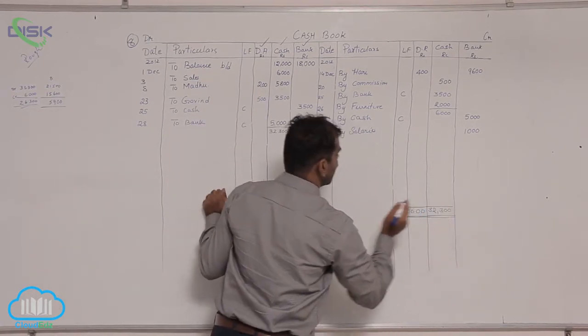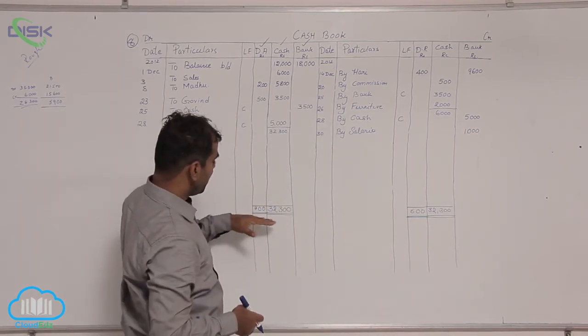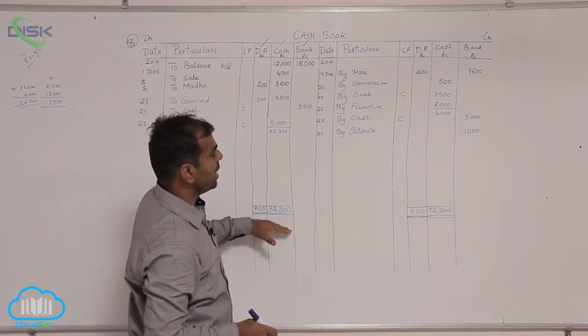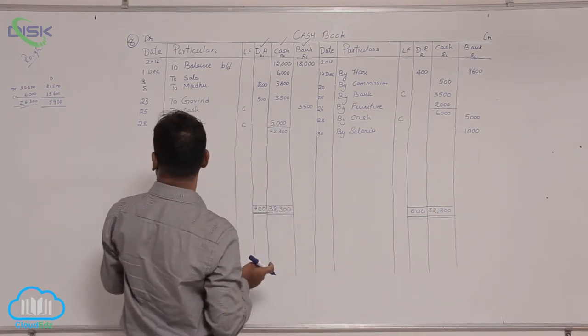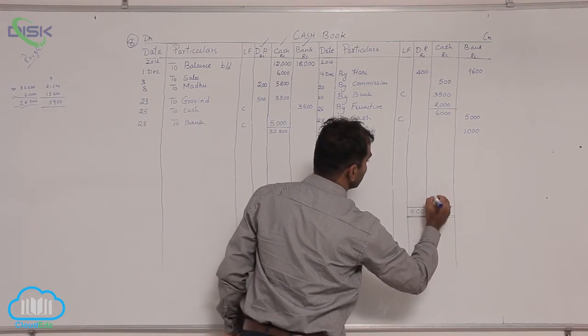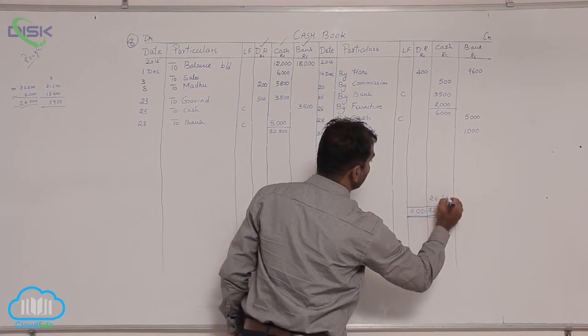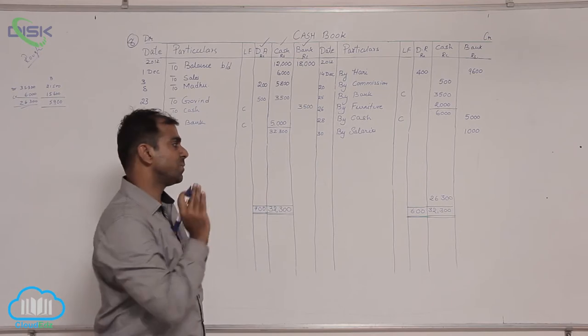What it means? It means you have received money worth 32,300, out of which you paid money 6,000. So when you take the difference, 32,300 minus 6,000, it is 26,300. This is the cash available with you at the end of the month.